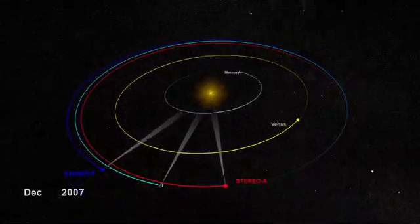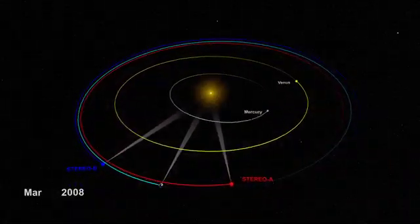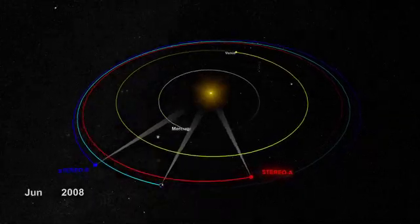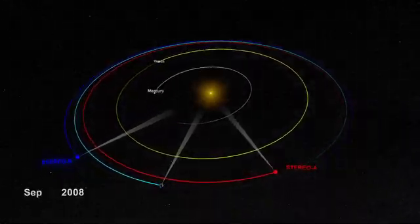Over the last four years, the two spacecraft have slowly made their way along Earth's orbit, with STEREO A advancing ahead and STEREO B falling behind.